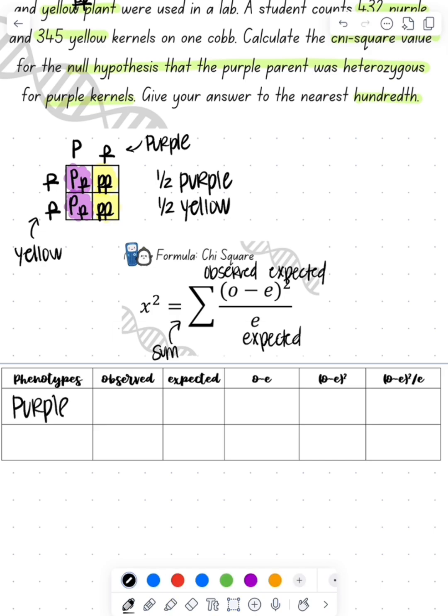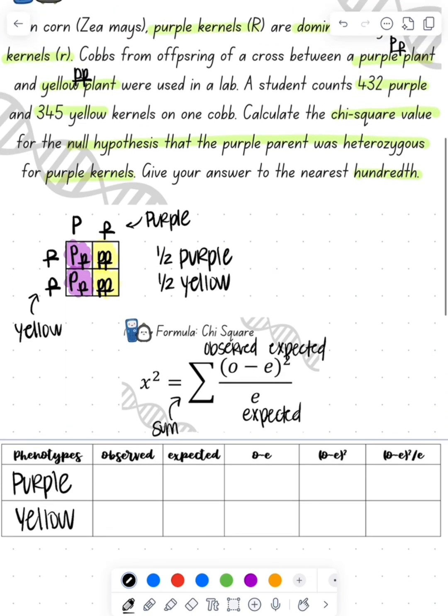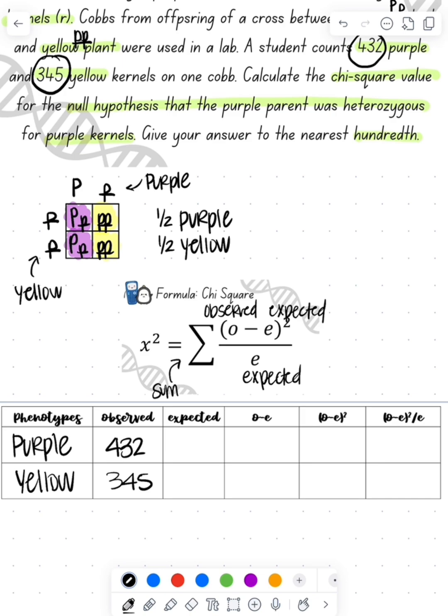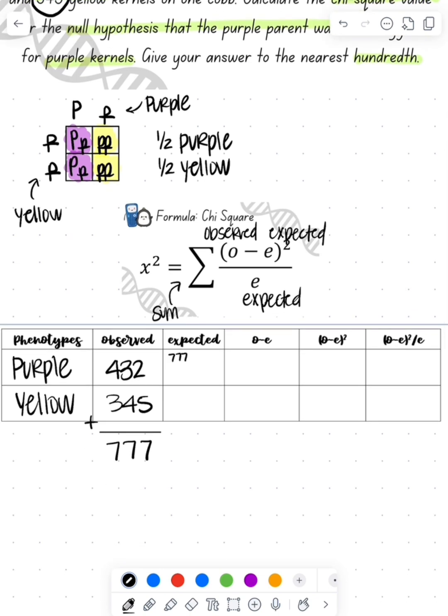Then we're going to fill in our observed. We'll go back up to the question to see what our observed is. We see that we observed 432 purple and 345 yellow. So we'll add those together. That gives us 777.